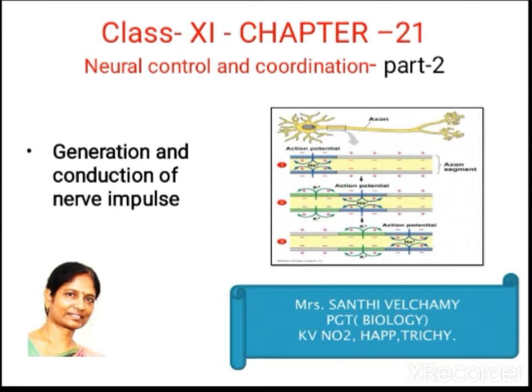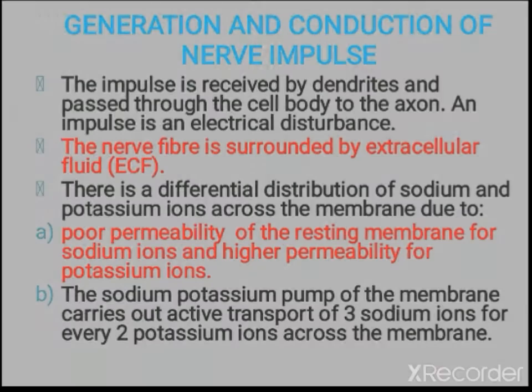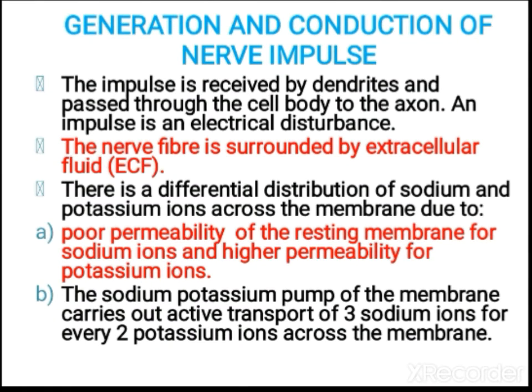Hello children, welcome to today's biology class. Today let us continue the chapter Neural Control and Coordination. We will cover the topic generation and conduction of nerve impulse. The impulse is received by dendrites, passed through the cell body, and then to the axon. An impulse is an electrical disturbance.